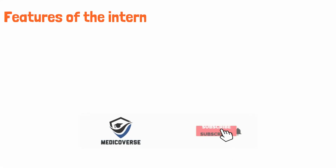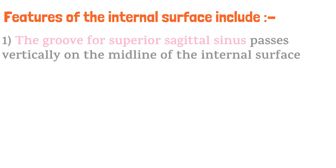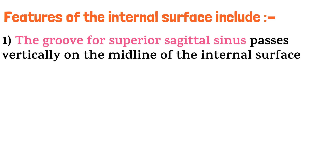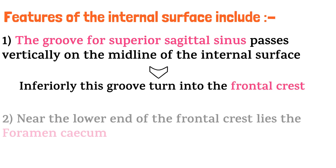Features of the internal surface include: the groove for the superior sagittal sinus passes vertically on the midline of the internal surface. Inferiorly, this groove turns into the frontal crest. Near the lower end of the frontal crest lies the foramen cecum.